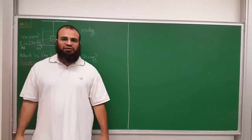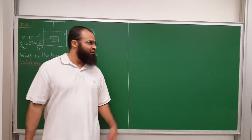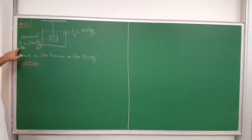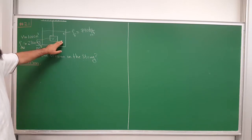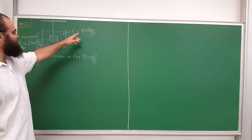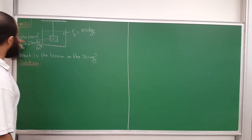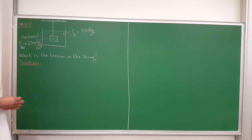Hi and welcome back. Today I'm going to do some problem solving from the fluids chapter. Here we have a piece of aluminum with a density of 2700 kilograms per cubic meter. The volume of this block is 100 cubic centimeters and it's submerged in ethanol (ethyl alcohol), which has a density of 790 kilograms per cubic meter. It's suspended by a string because aluminum will sink, and the question is: what is the tension in the string?